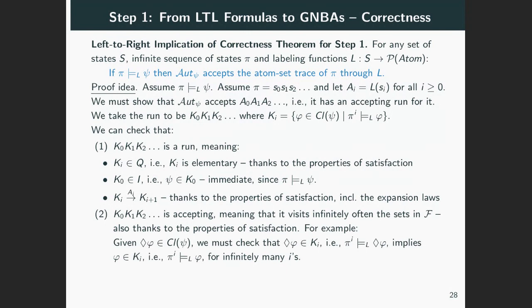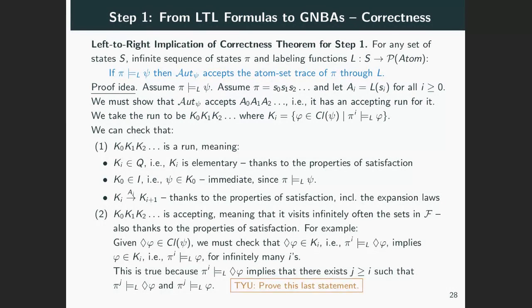For example, let's take eventually. What we need to check is that if eventually φ is in the closure, then for infinitely many i's, eventually φ being in Kᵢ will imply that φ itself is in Kᵢ. And this is true because for any i where eventually φ holds, there will be a j further up in the future where both eventually φ and φ will hold. Please take it as an exercise to prove the last statement.